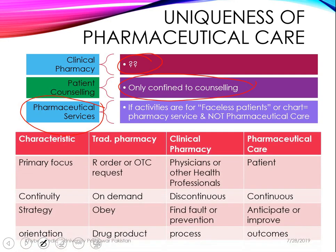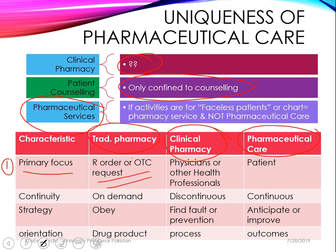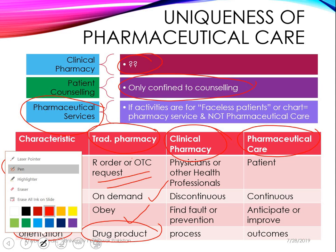A table helps to understand the difference between traditional pharmacy, clinical pharmacy, and pharmaceutical care. In traditional pharmacy, the primary focus is on the prescription order. For example, in Pakistan, pharmacies around hospitals receive a prescription order or OTC request and fill it on demand. The pharmacist is oriented only on the drug product — selling it — to earn the 15-20% procurement margin. There is no pharmacist intervention beyond dispensing.